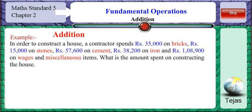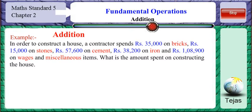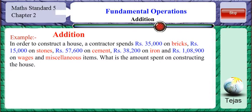Let us look at another example. In order to construct a house, a contractor spends 35,000 on bricks, 15,000 on stones, 57,600 rupees on cement, 38,200 rupees on iron, and a total of 1,08,900 rupees on wages and other miscellaneous items. What is the amount spent on constructing the house?